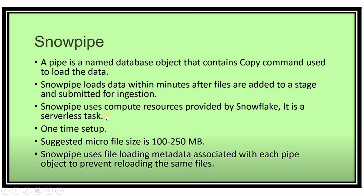Snow Pipe uses compute resources provided by Snowflake — it is a serverless task. Unlike tasks where you specify a warehouse name, Snow Pipe uses Snowflake's own compute resources. It is a one-time setup: create the Snow Pipe once and it will automatically ingest data from the external stage to the Snowflake tables. The suggested micro-file size is 100 to 250 MB.